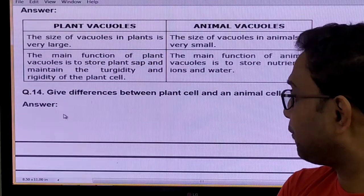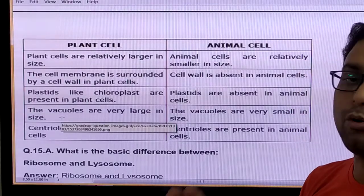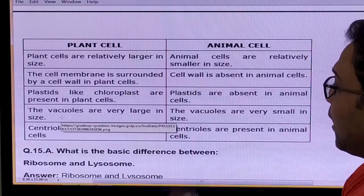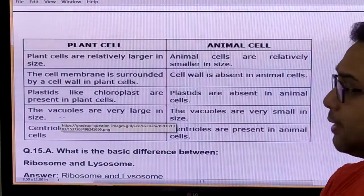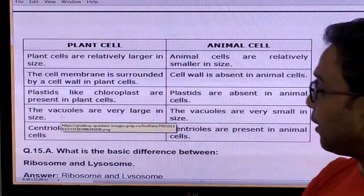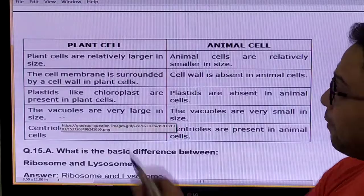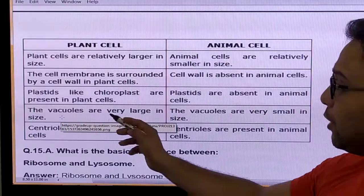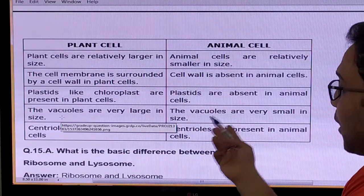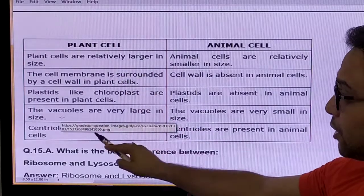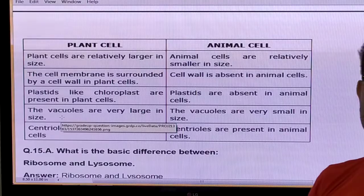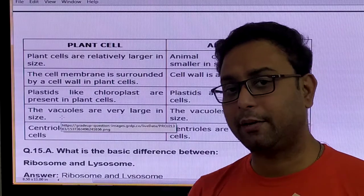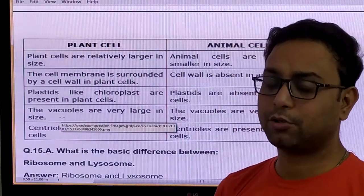Give the differences between plant cells and animal cells — the most important question. Plant cells are relatively larger in size; animal cells are smaller. Cell membrane in plant cells is surrounded by a cell wall; cell wall is absent in animal cells. Chloroplasts are present in plant cells; chloroplasts are absent in animal cells. Vacuoles are very large in plant cells; vacuoles are very small in animal cells. Centrioles are absent in plant cells; centrioles are present in animal cells. Please remember these five differences — this question is very important in your school.